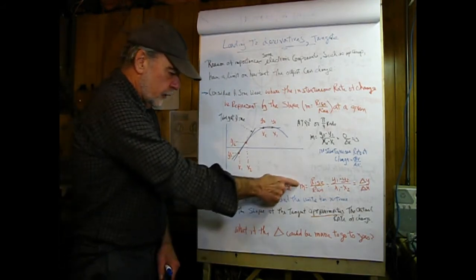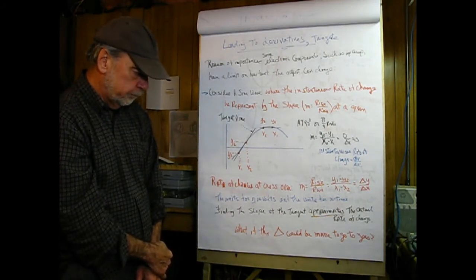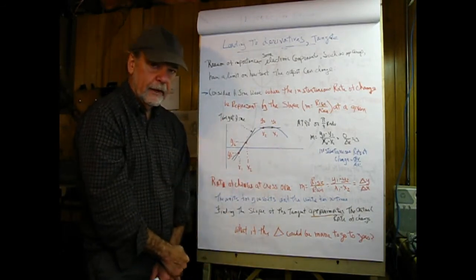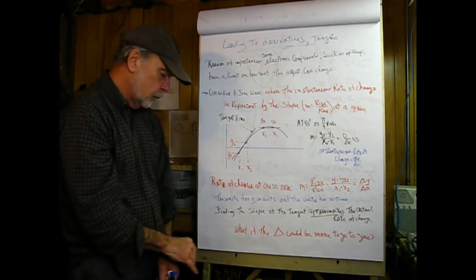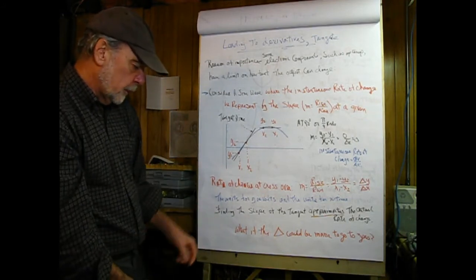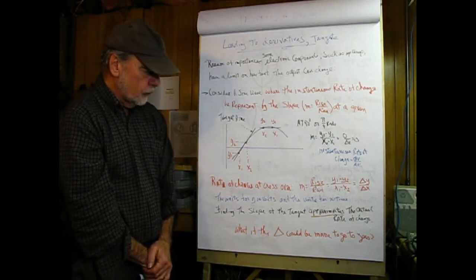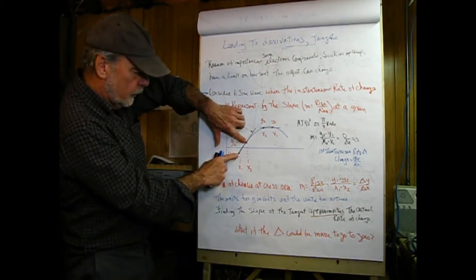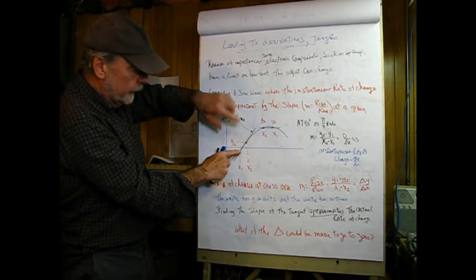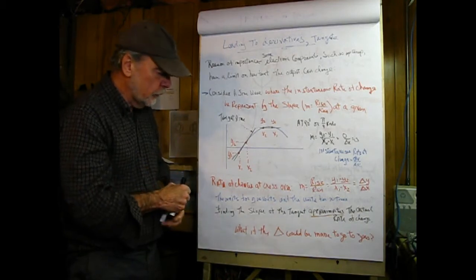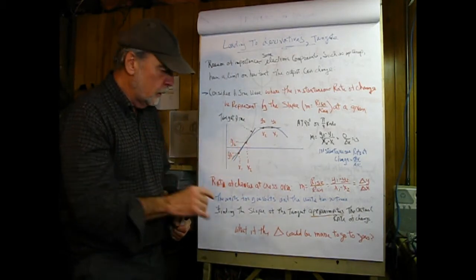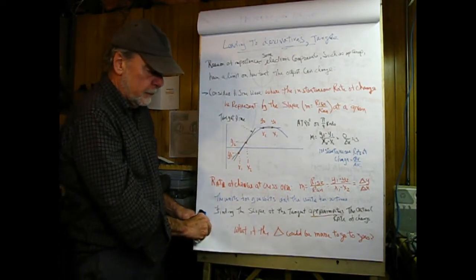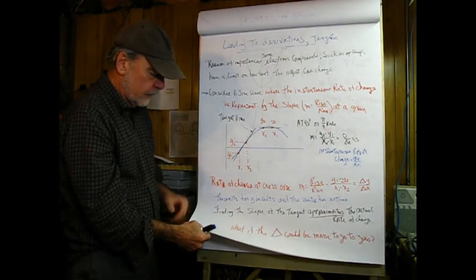In electronics, X would be the T-axis for time and Y would be the V-axis for voltage or I-axis for current. It's all about finding the slope. The question is: what would happen if delta could be made to go to zero? If we slid those two points closer and closer to the crossover point, the tangent line would approach the exact value of the rate of change. Tangent lines are estimates — we want to see what happens if delta goes to zero for an exact value.